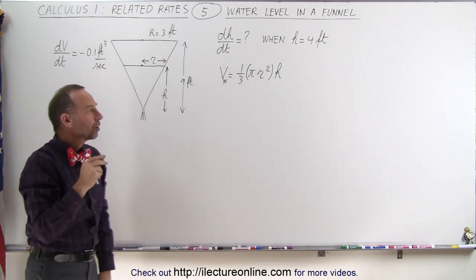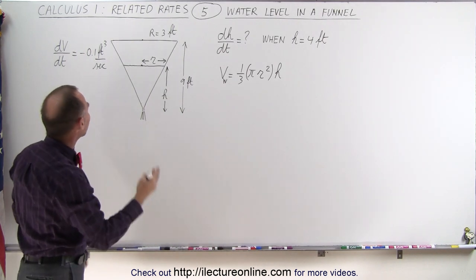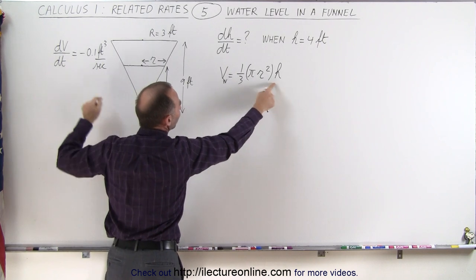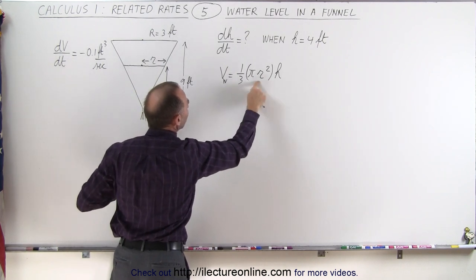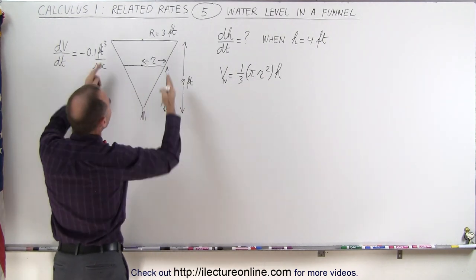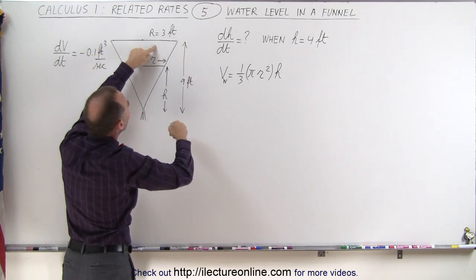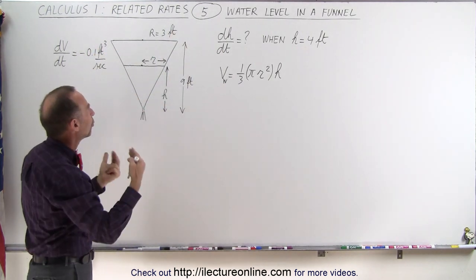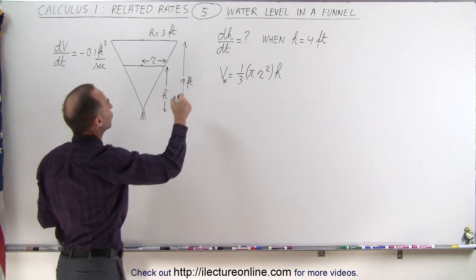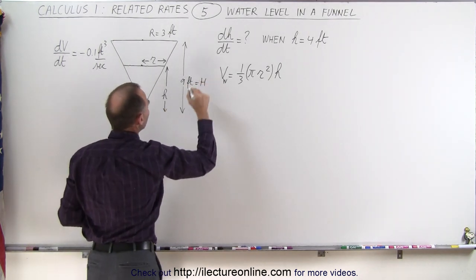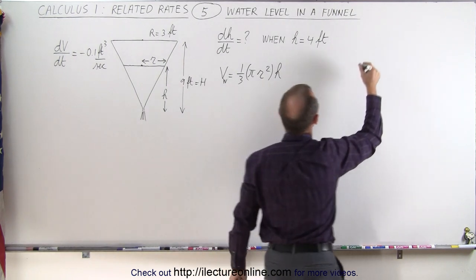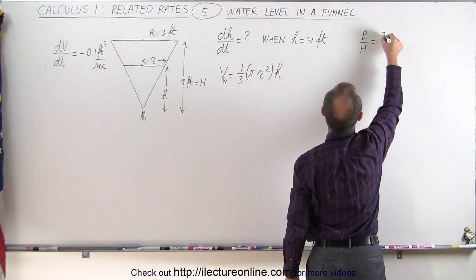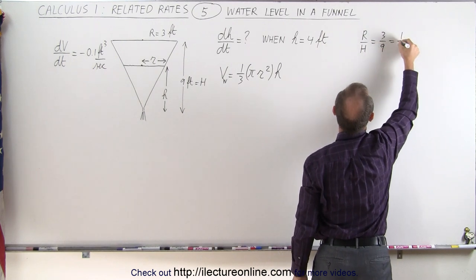But we don't want r there because we want to relate the volume to h, so we have to eliminate r. We have to find some relationship between r and h. Here we're given that the radius at the top is 3 feet when the height is 9 feet. So that shows us the ratio of r to h. We can see here that the ratio of r to h is 3 feet to 9 feet, which is 1 over 3.